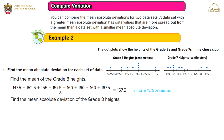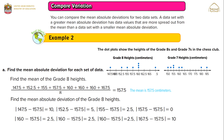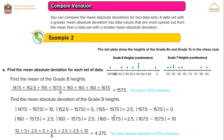Find the mean absolute deviation of the grade 8 heights. We find the absolute difference between each value in the data set and the mean of 157.5. The absolute differences are 10, 5, 2.5, 0, 2.5, 2.5, 2.5, 2.5, and 10. To find the mean absolute deviation, we add these values and divide by 8. The mean absolute deviation is 4.375 centimeters.